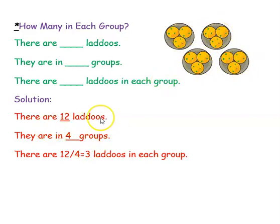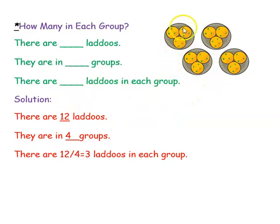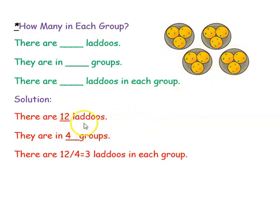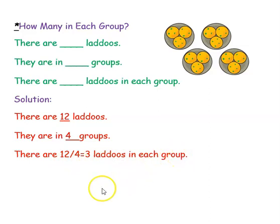There are 12 laddus and they are in 4 groups. There are dash laddus in each group — 1 group has how many laddus? Totally 12 laddus and we have 4 groups. So 12 divided by 4 — there are 3 laddus in each group.